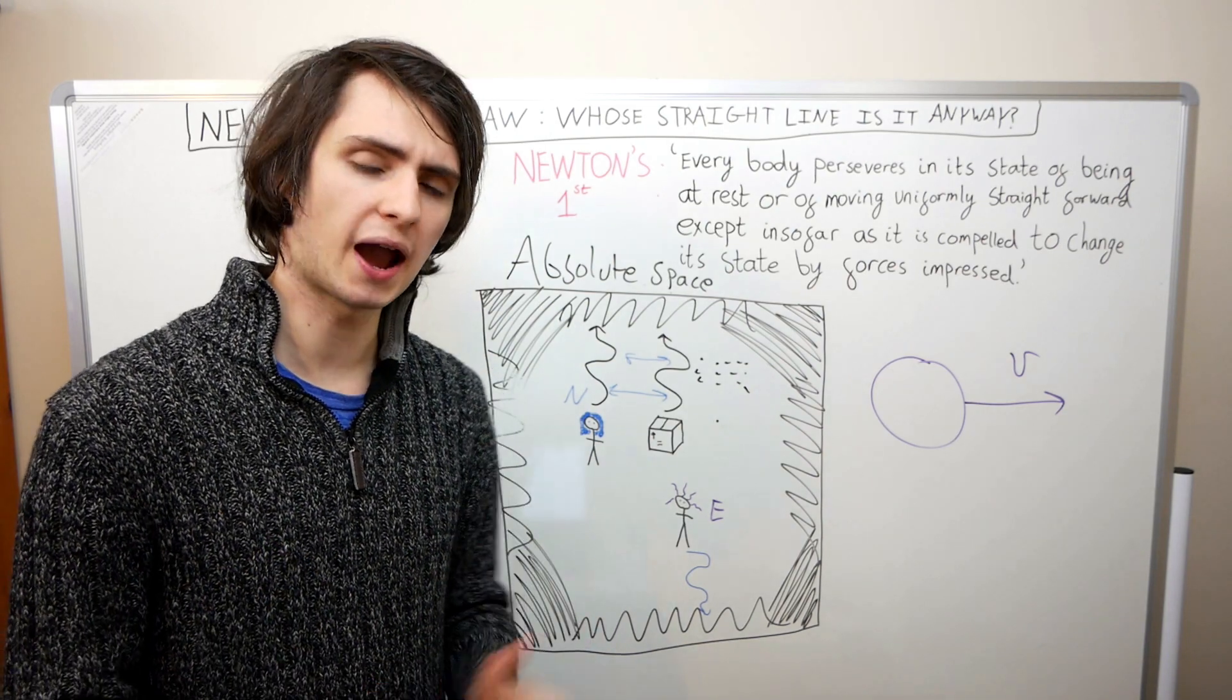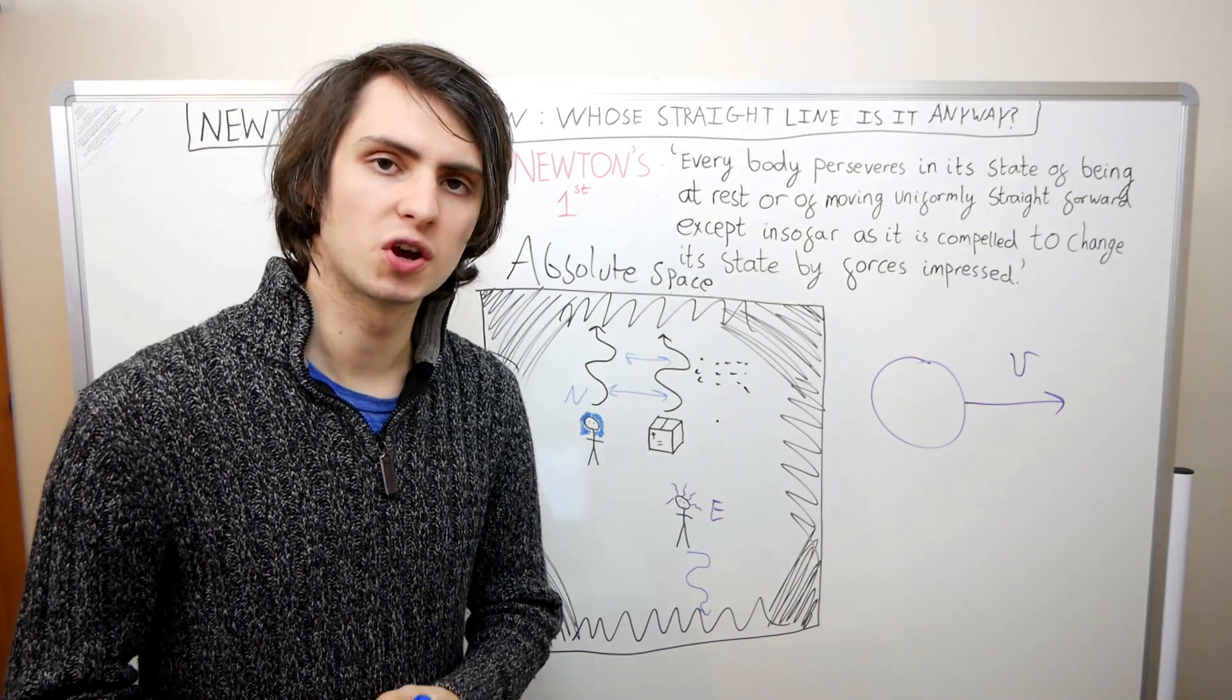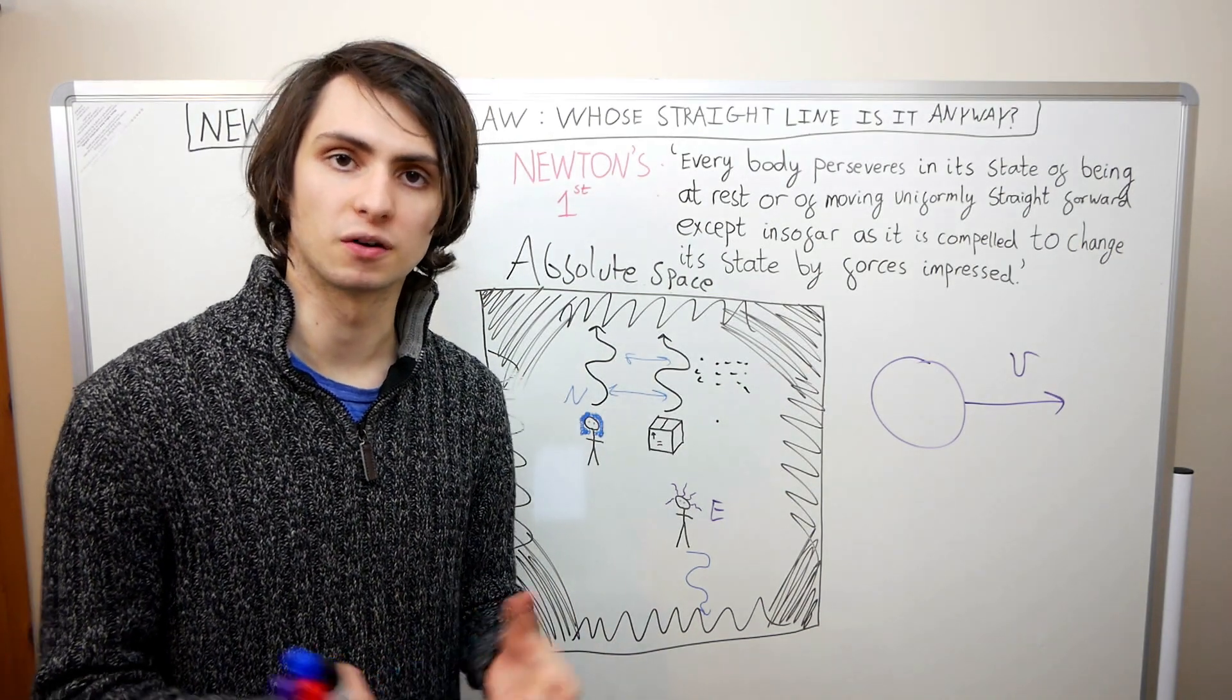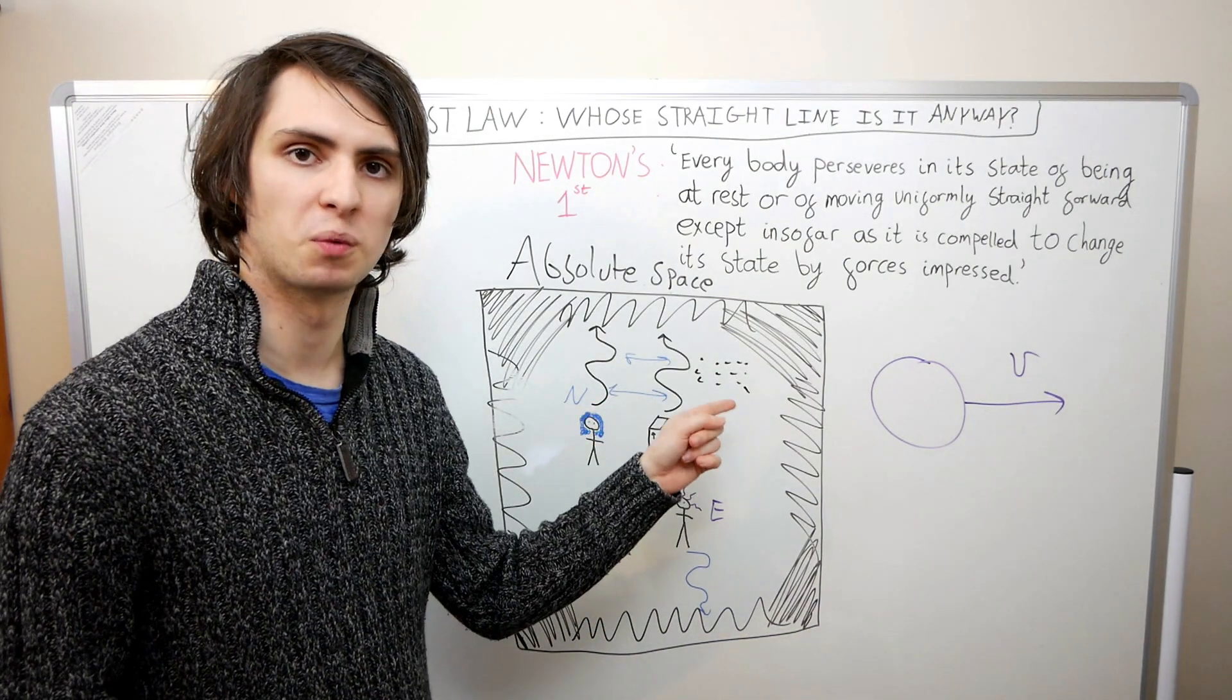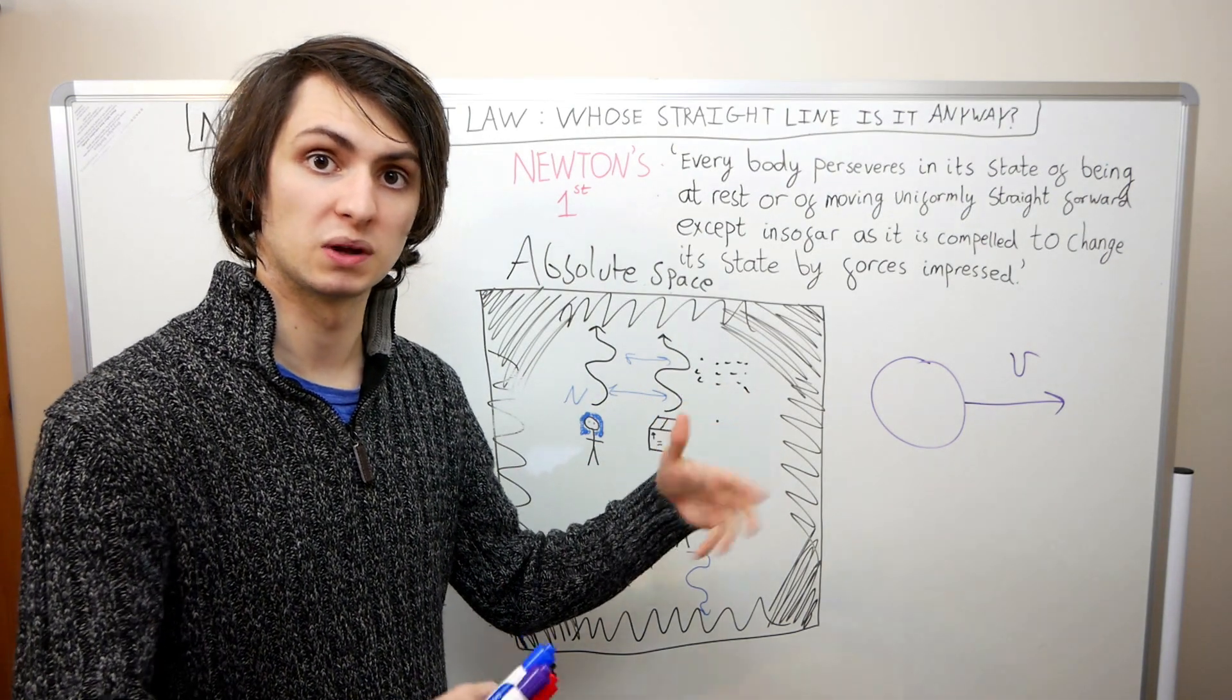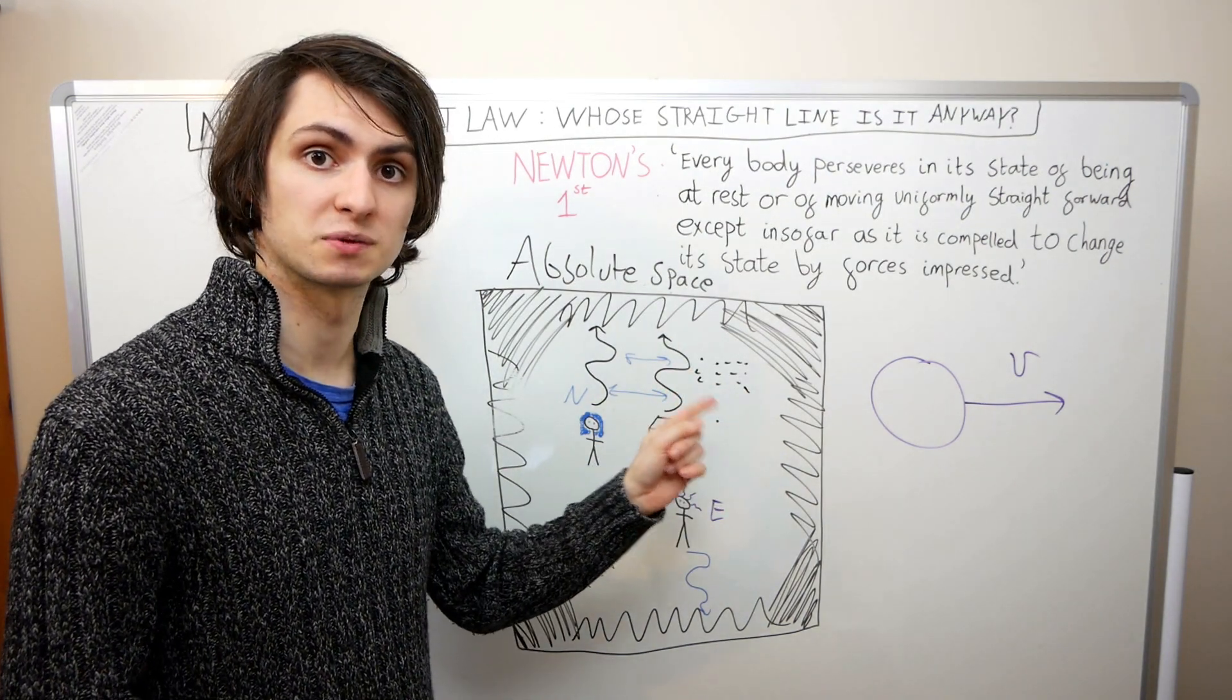How do we know how things are moving relative to absolute space? If we want to know whether something is really being acted on by a force or not, then we need to know how that thing is moving relative to the points of absolute space. Which means we need to know where these points of absolute space are.